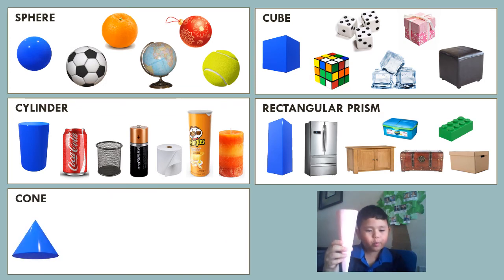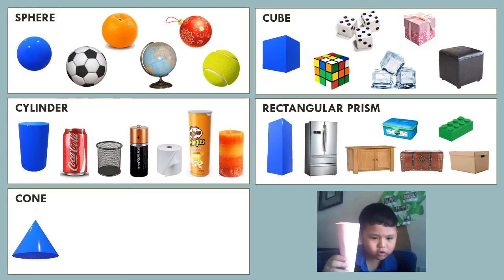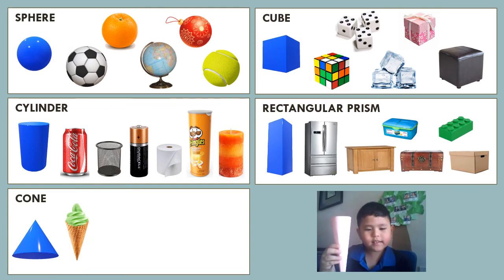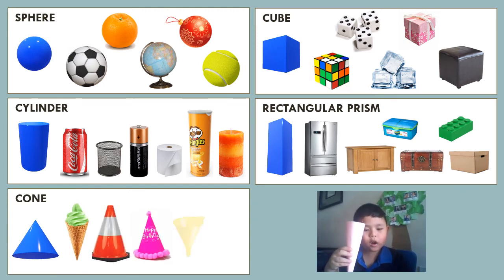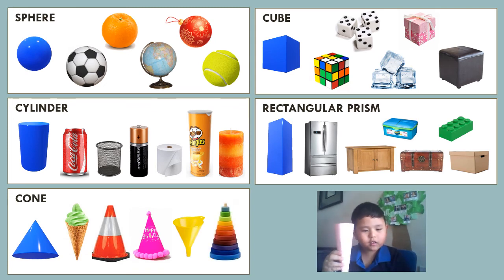Then there is the cone. The cone has a single flat face in the shape of a circle, and the body leads to a pointed end, which is called a vertex. We see this shape in the ice cream cone, traffic cone, party hats, and stacking toys.